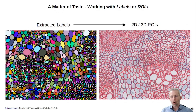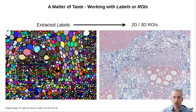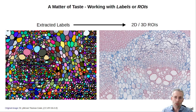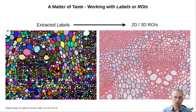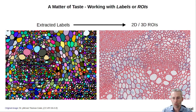Once we have our objects extracted it's a matter of taste if you want to continue working with the labels — for example via MorpholibJ or other tools — or if you want to convert them to ROIs. We have two functions: one, thanks to Ram van der Berg, which is a script reading labels into the 2D ROI Manager, and we can also use the 3D ROI Manager from Thomas Boudier to read out those ROIs and then continue working on them.